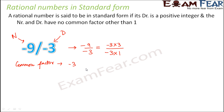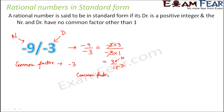Any number which divides another number completely leaving 0 as remainder is a factor of that number. So in this case, minus 3 and minus 3 cancel out, giving you 3 by 1. So 3 is the numerator and 1 is the denominator. The only common factor between 3 and 1 is 1.